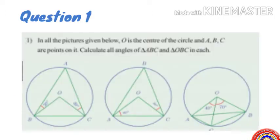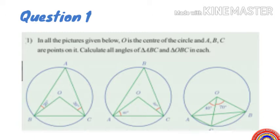Let's move to the exercise questions on page number 53. Question number one: in all the pictures given below, O is the center of the circle and A, B, C are points on it. Calculate all the angles of triangle ABC and triangle OBC in each. We have to find all the angles of triangle ABC and triangle OBC.